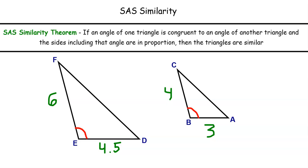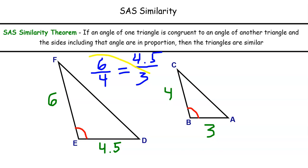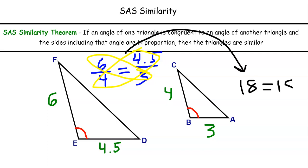Very similar to the side-angle-side congruence theorem, here we need two sides and the included angle. Unlike congruence, though, we're not looking for congruent sides — we're looking for proportional sides. In this case, sides FE and FD include angle F in the left triangle, and sides CB and BA include angle B in the right triangle. To confirm proportionality, we check that FE/CB equals ED/BA — that is, 6/4 equals 4.5/3. Using cross products, both equal 18, so triangle FED and triangle CBA are similar.